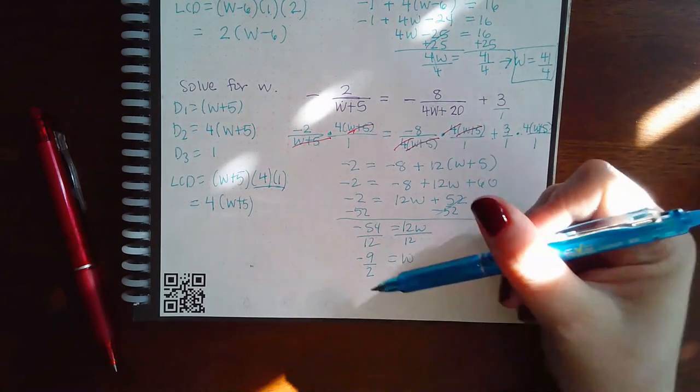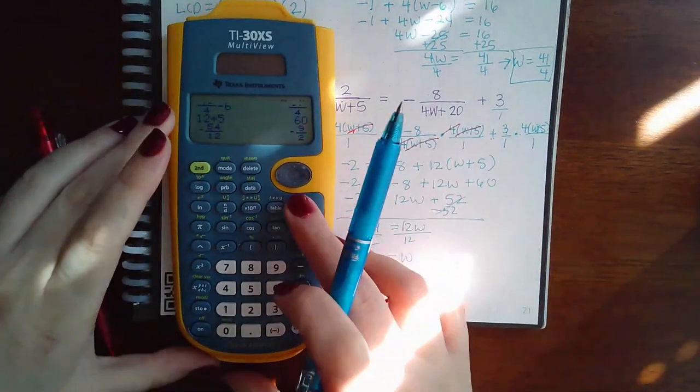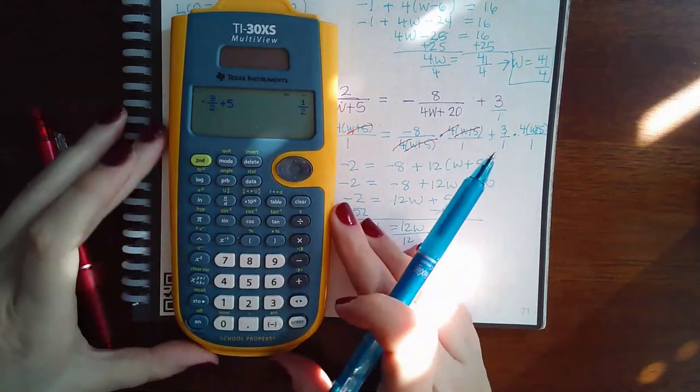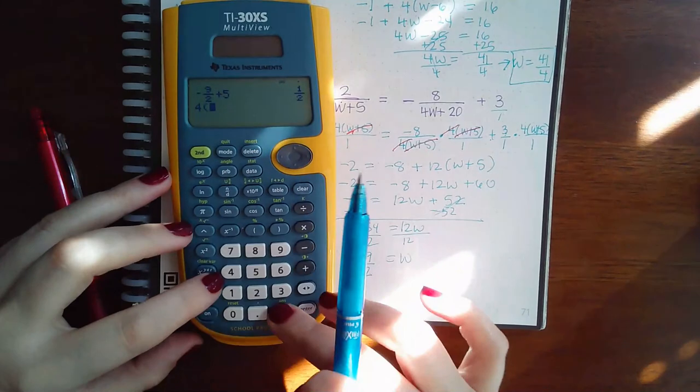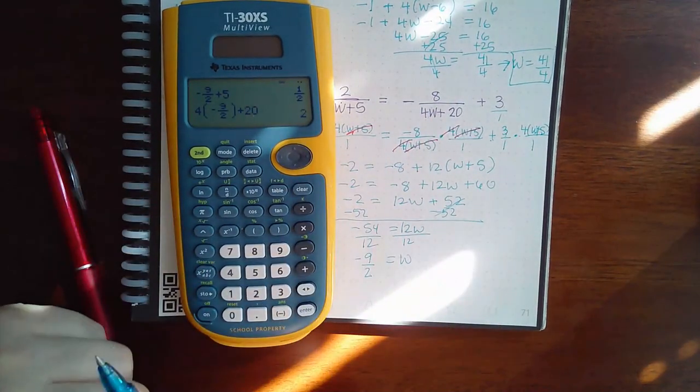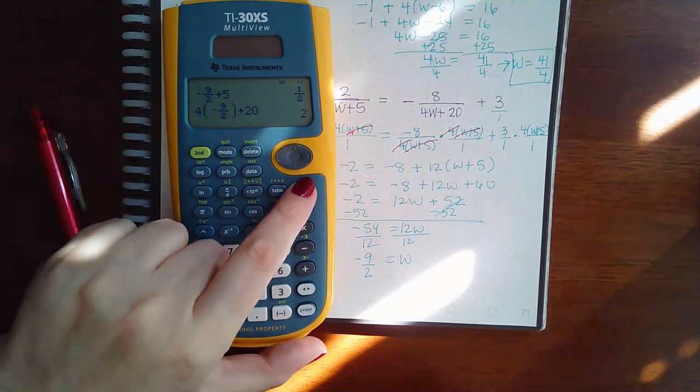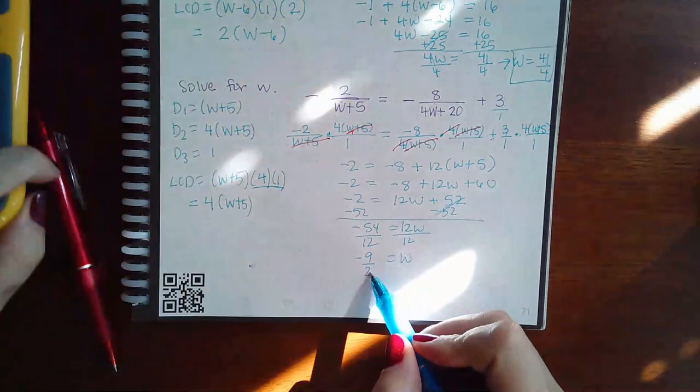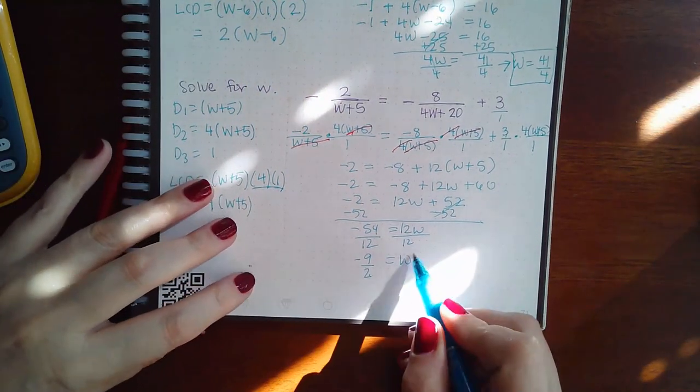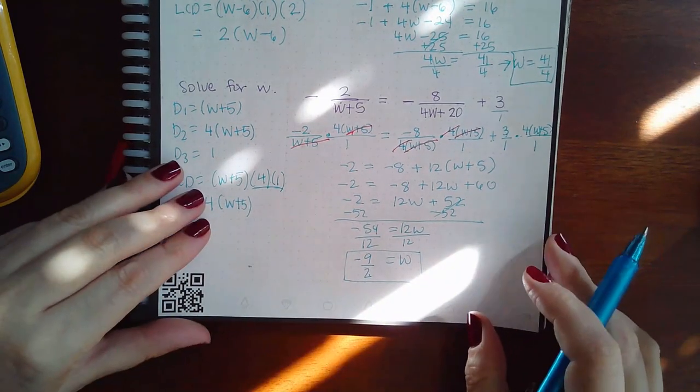So will negative 9 halves make this denominator 0? I doubt it. But let's check. No, it's not 0. Will it make that denominator 0? Nope, it won't make that denominator 0. And 1 will not be 0. It doesn't just magically turn into a 0. So as long as this number, this solution doesn't make any of the denominators 0, this potential solution becomes an actual solution to the equation.